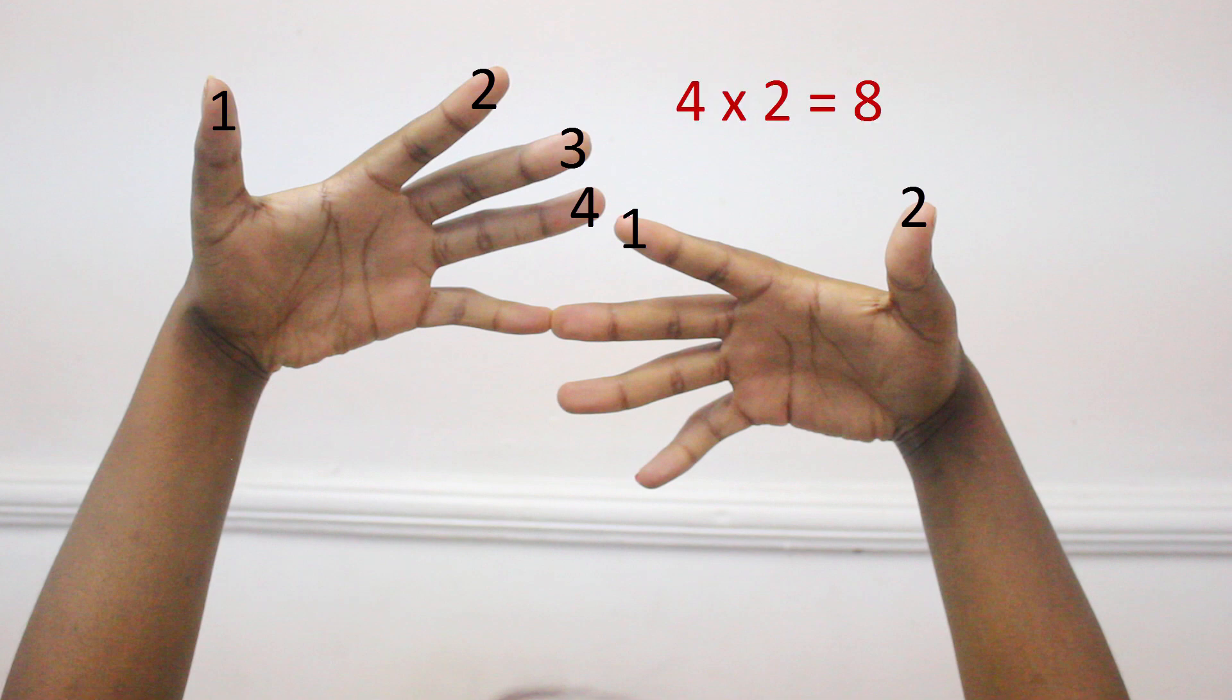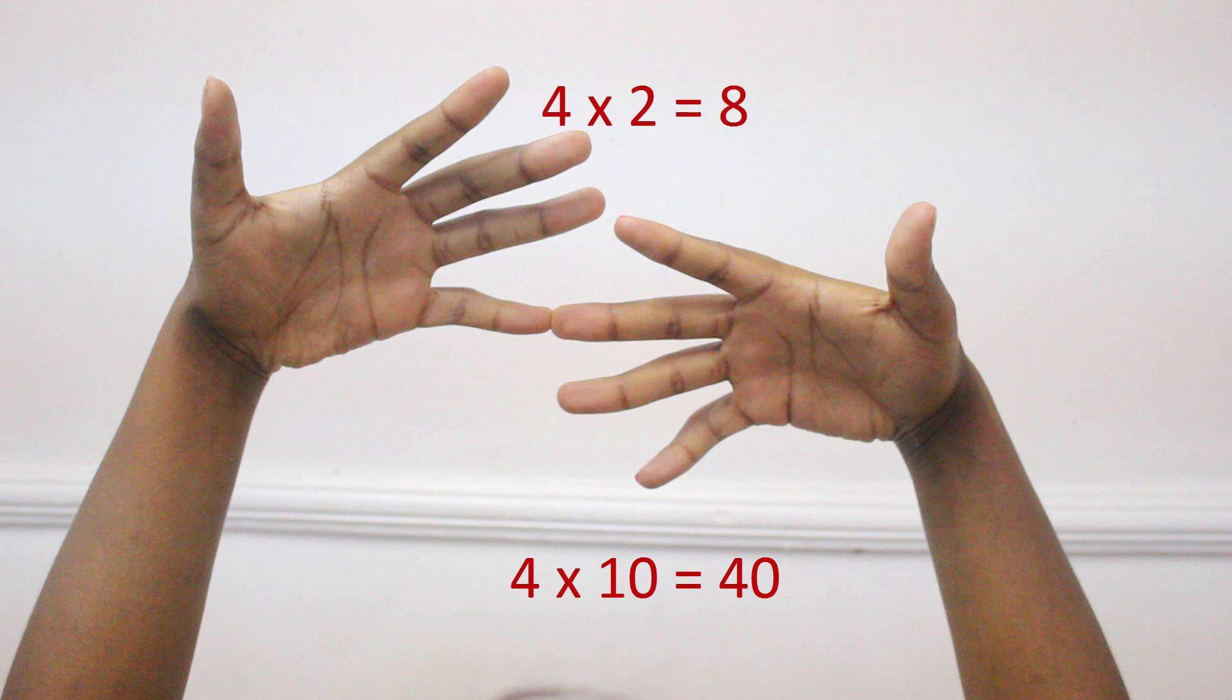So 4 times 2 equals 8. The second step is to calculate fingers touching and those dangling below. These are 10s. In this case, there are 4. That gives us 40. Let's add the two answers. 8 plus 40 equals 48.